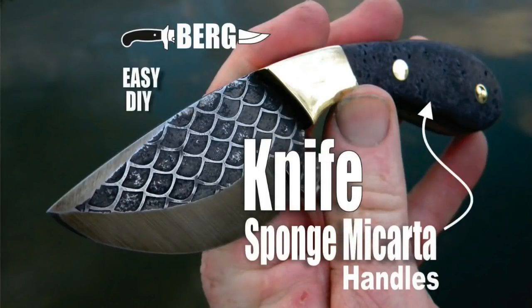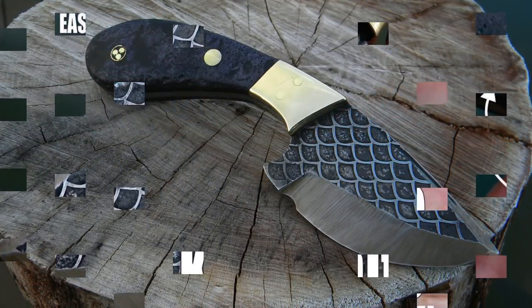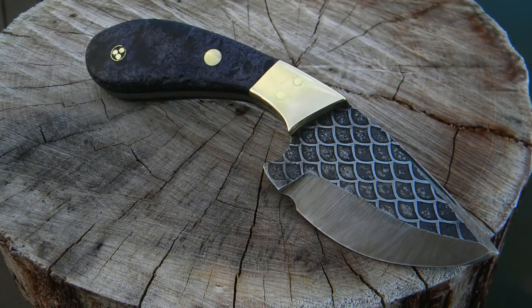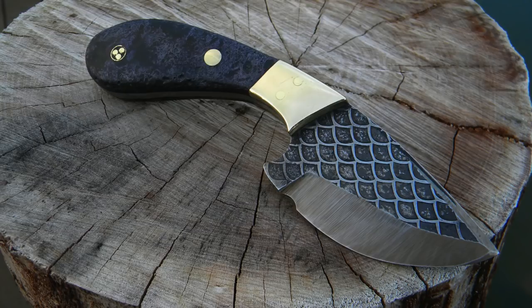Welcome to diyeasycrafts.com, how to make a do-it-yourself knife with sponge micarta scales. This particular knife is unique because it has a full blade etching.